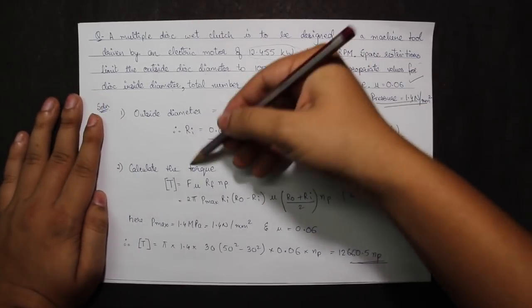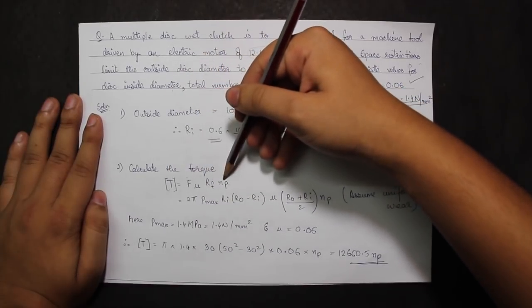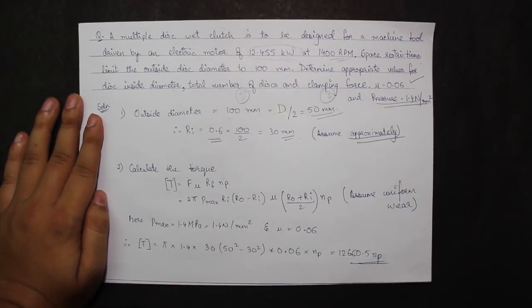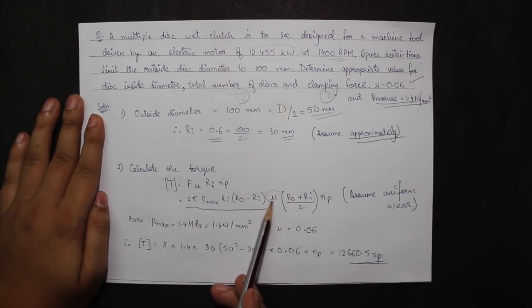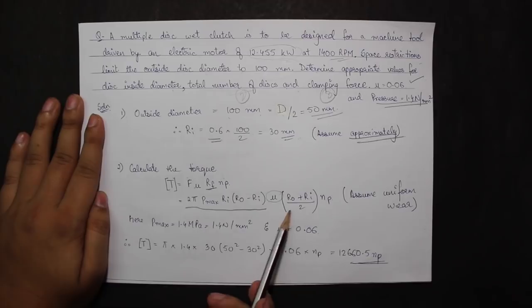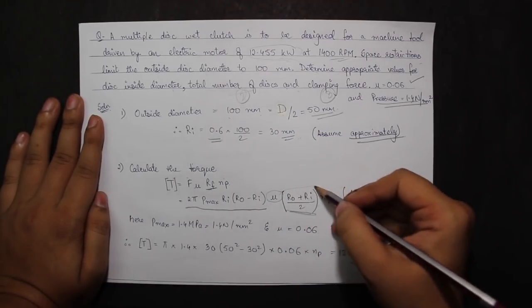Coming to the first formula calculation of the torque: F mu Rf into NP. Now I know that F is this value. Mu I have written as is, and Rf is for the uniform load given by this formula: R0 plus RI divided by 2. NP is the term I have to calculate.